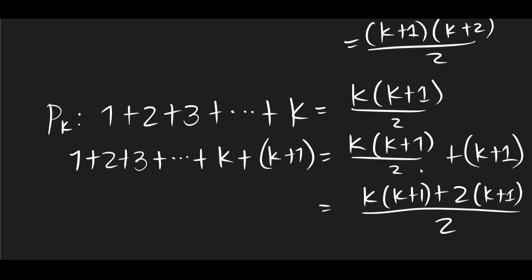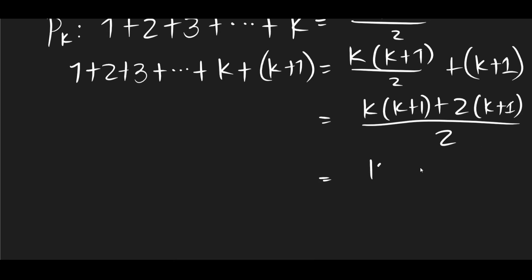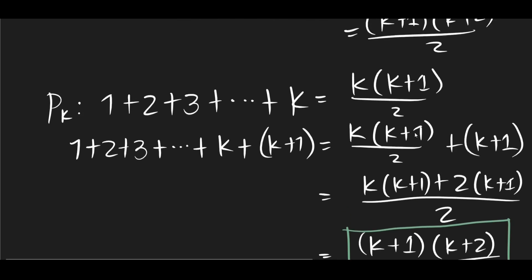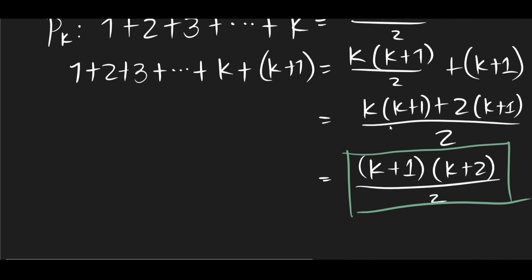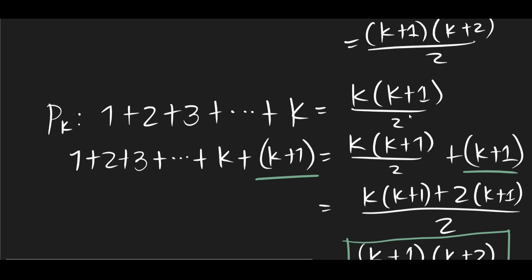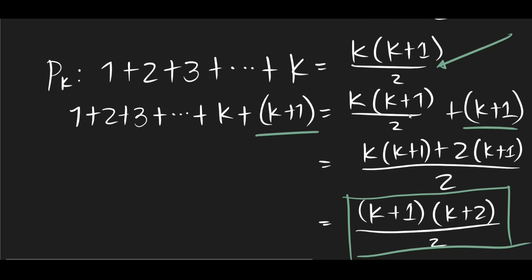If we factor out k plus 1 in the numerator, you will get k plus 1 times k plus 2 over 2. So there you have it. We have arrived at Pk plus 1. We obtained Pk plus 1 just by adding the same expression k plus 1 on both sides. So if this is true, then definitely Pk plus 1 is also true.